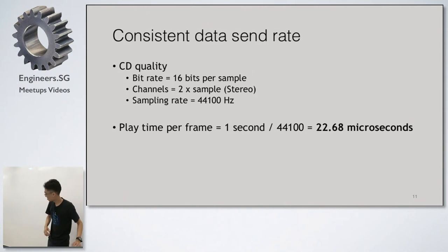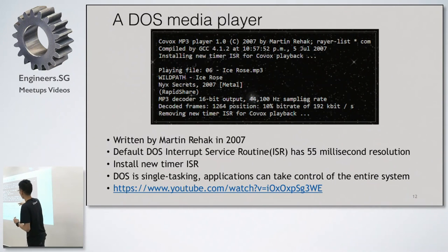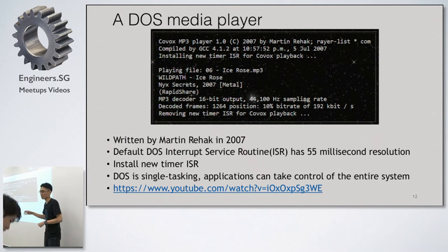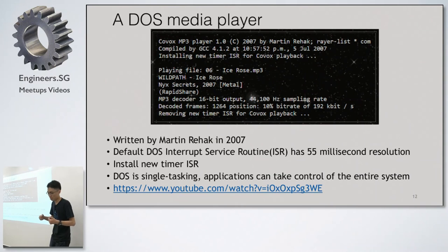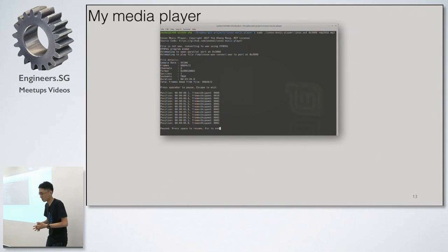I found that someone actually wrote a DOS media player for this, quite recently in 2007. He replaced the DOS interrupt service routine — something like a timer you can ask the CPU to use at a certain interval. The problem is the default DOS ISR only has 55 millisecond resolution, nowhere near the 22 microsecond requirement. What he did was replace the ISR, which is possible because DOS is low-level and a single application has full access to all computer resources. This is not the case for modern Windows and Linux.